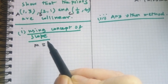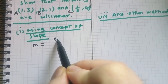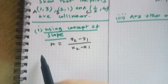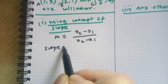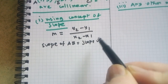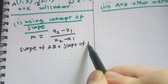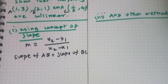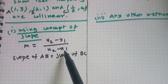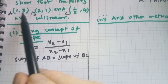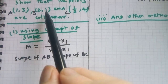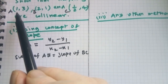The slope is equal to (y2 minus y1) by (x2 minus x1). We calculate the slope of AB using A as point (x1, y1) and B as point (x2, y2). Slope of AB equals (1 minus 3) by (2 minus 1).